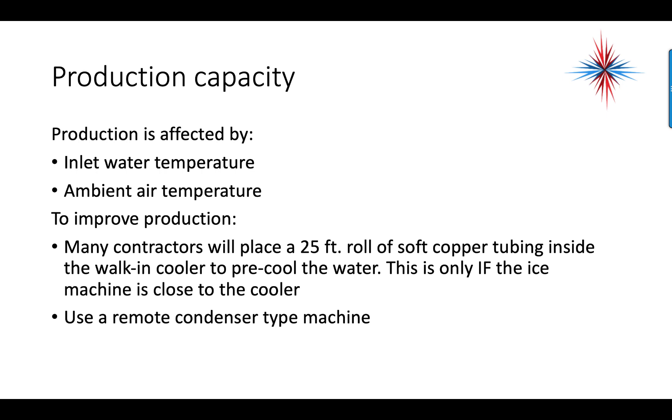You can also use a remote condenser type machine. In other words, get the condenser out of the kitchen or the building and put it on the roof or behind the building. That will actually help with the ambient air, but that isn't used as often. Most often, the water temperatures are close enough to specs that you have decent capacity according to what the machine says. Don't undersize an ice machine. It's better to be a little bit oversized.